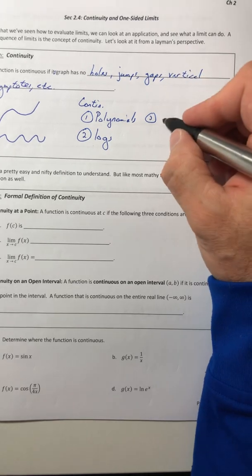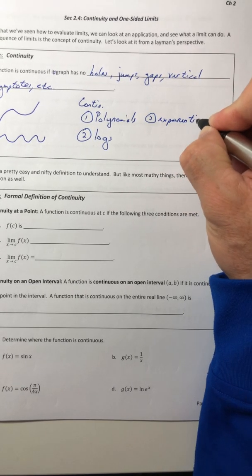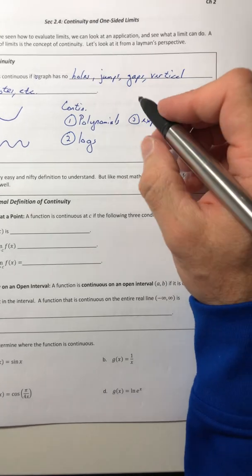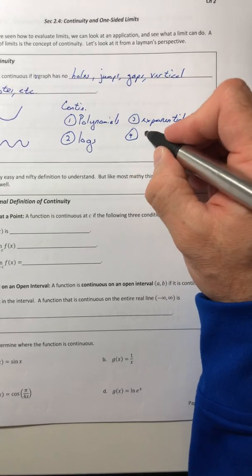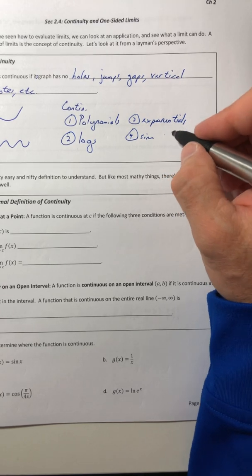The inverse of logs would be exponentials. Sine and cosine would be the only two trig functions that are continuous.